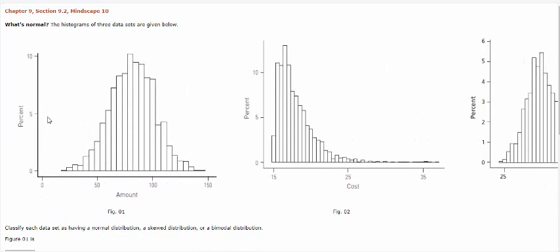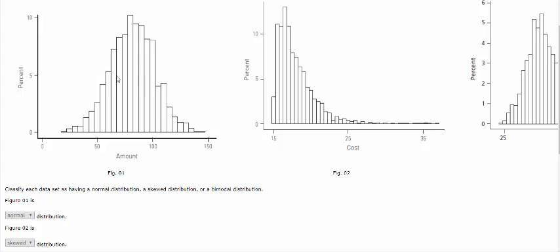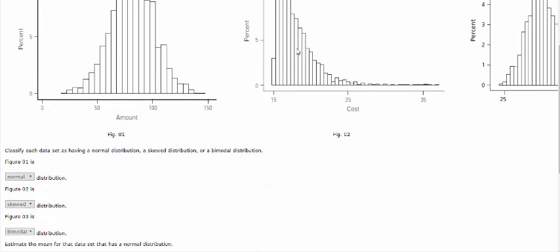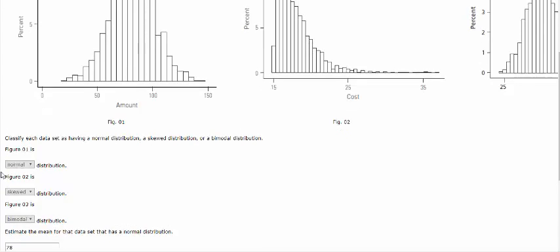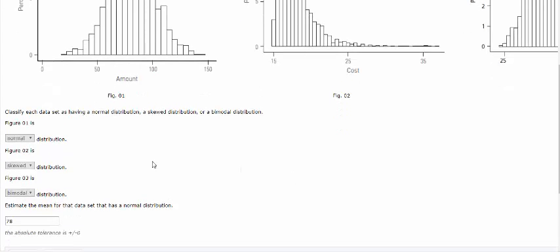When you go to tackle this problem in your homework, figure one is going to be a normal distribution, figure two is going to be skewed, and number three is going to be the bimodal distribution.